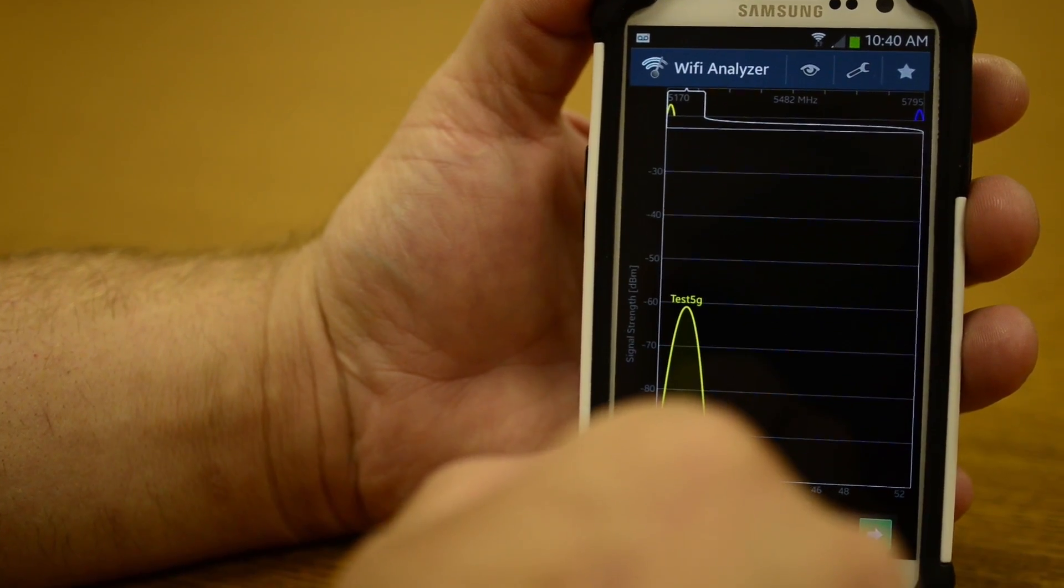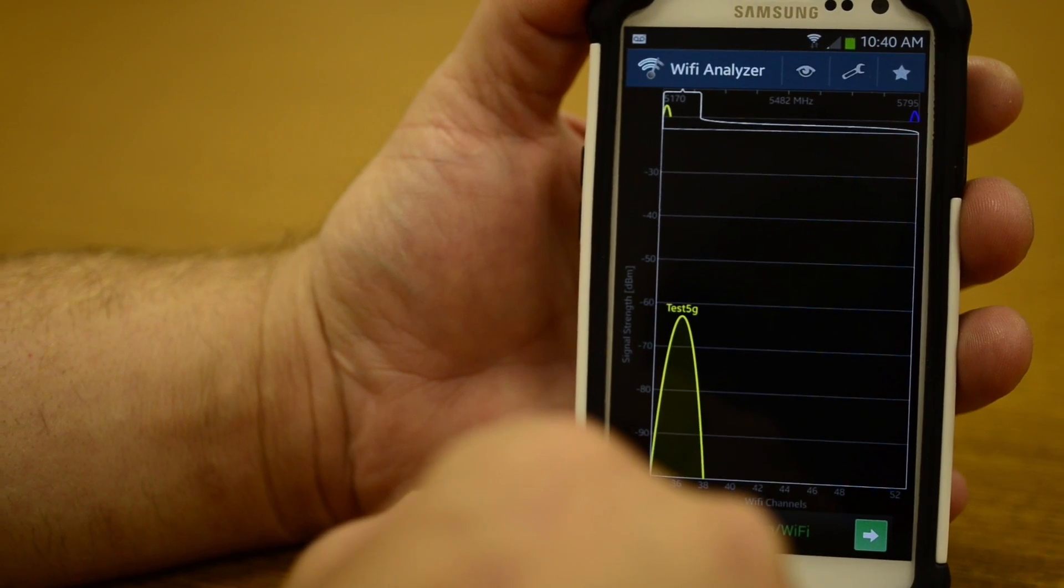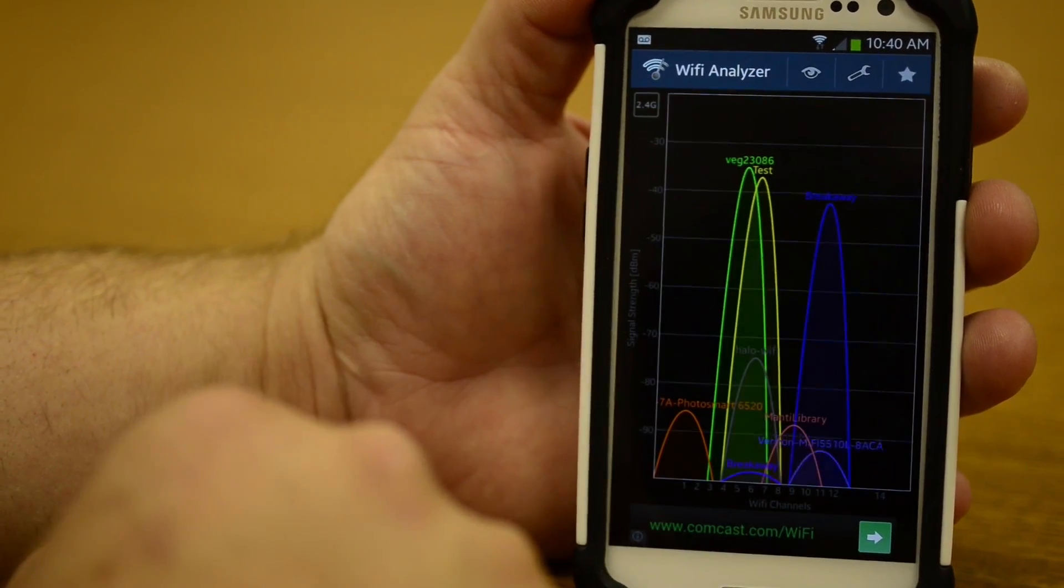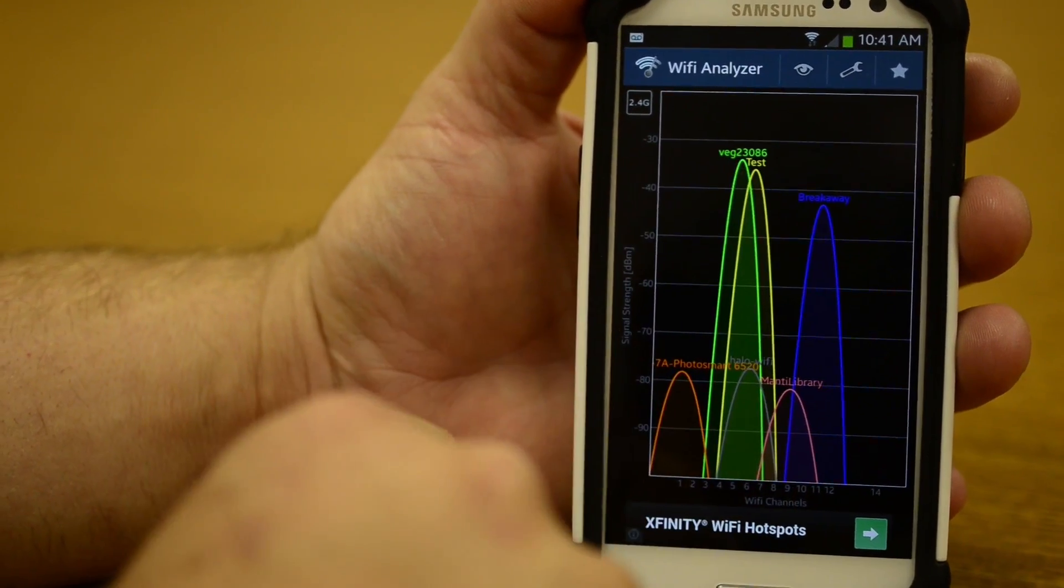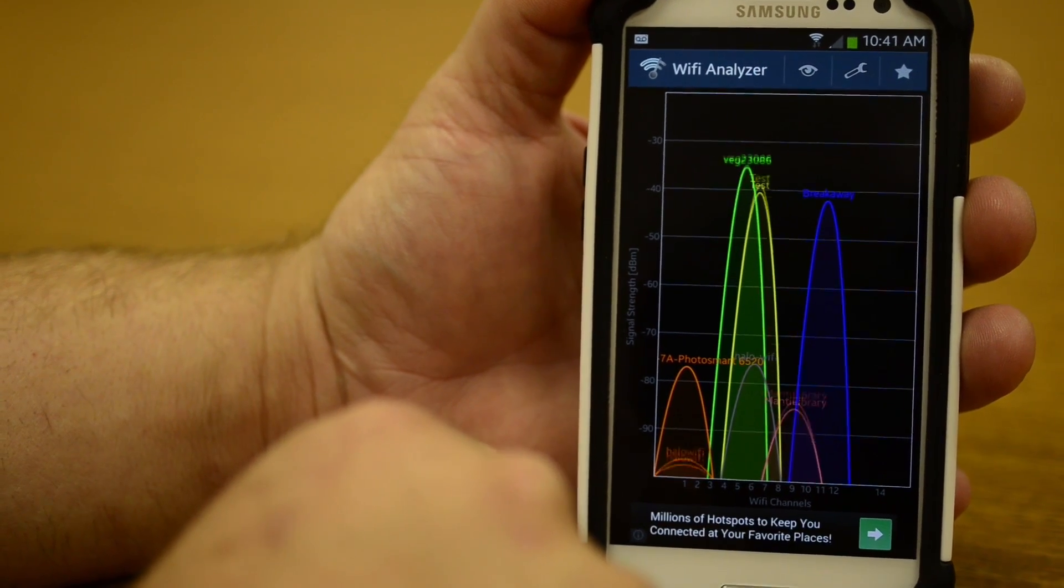So if you have a 5G router, it's going to have less interference, whereas if you have the older routers with the 2G, you can see there's a lot of those out there and they can cause problems.